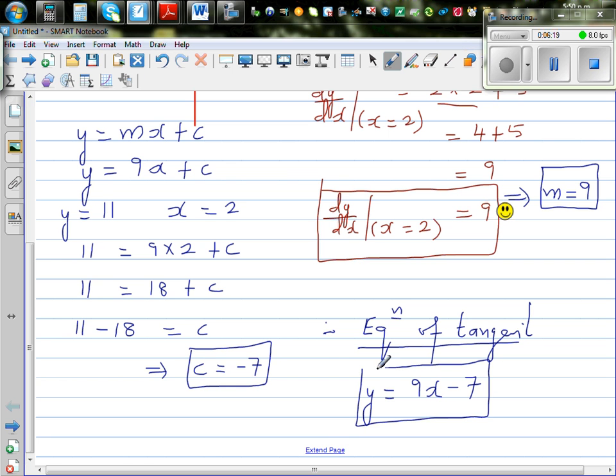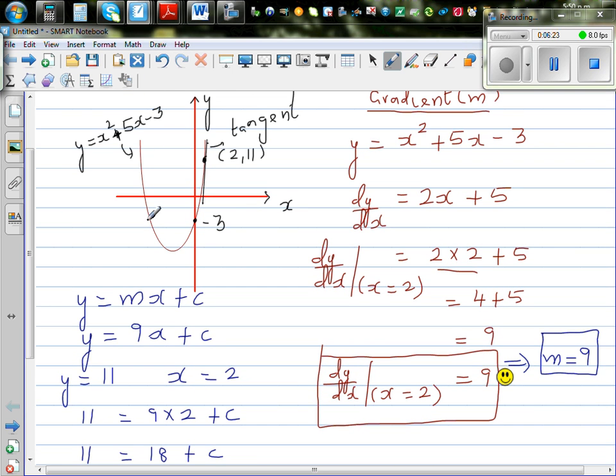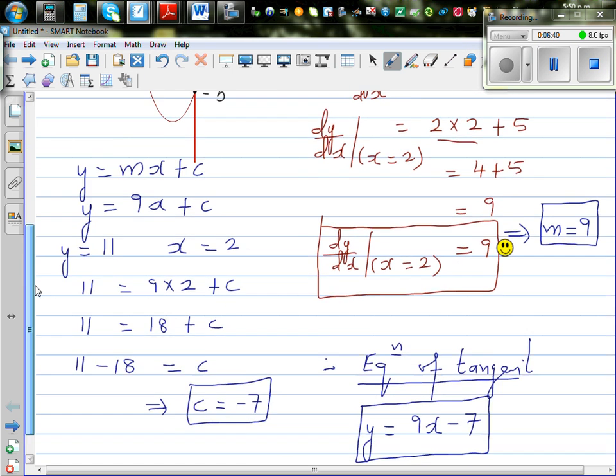Now I'll check my answer on the graphic calculator. So what I'm saying is, if this is the parabola, this is the graph or this is the curve, and this is the tangent, there's only one point of intersection between the curve and the line. So if you draw both these graphs, the point of intersection should be 2, 11. That's how you can check whether your answer is right.